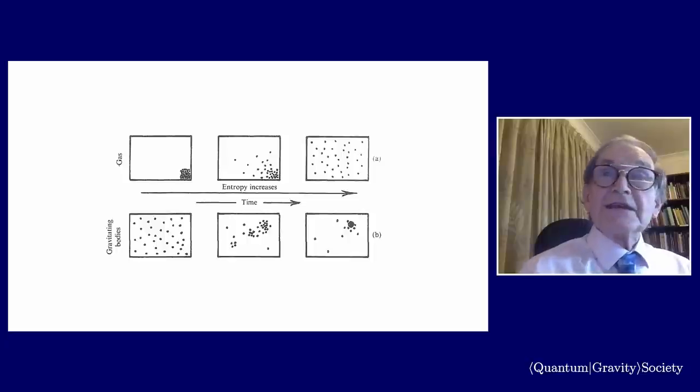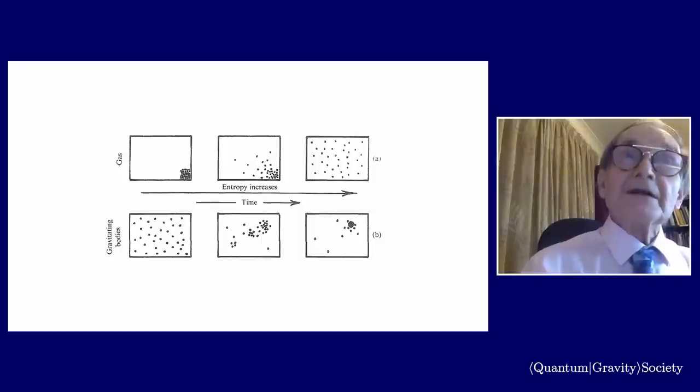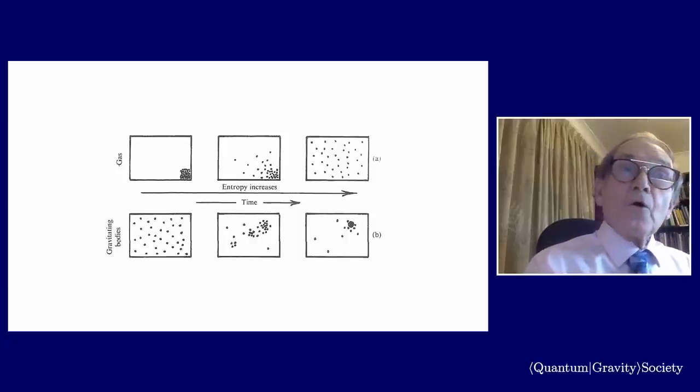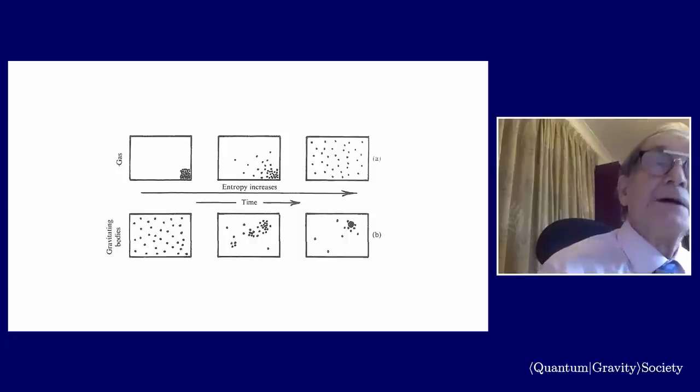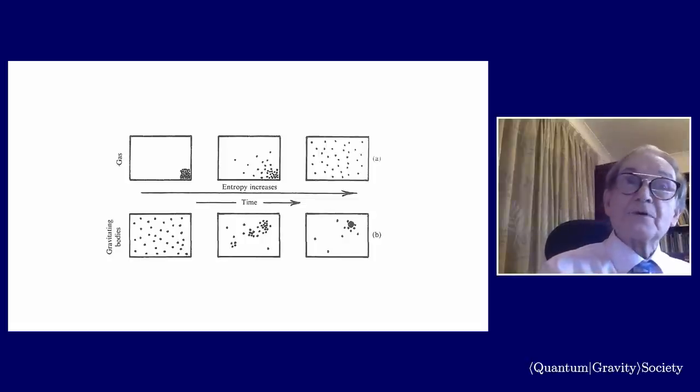So what we see in that Planck curve that I was just showing you is that the matter, yes, that is a very high maximum entropy state. But what we're also seeing, not from that picture, but from the uniformity of the microwave background all the way around, is telling us that the gravitational degrees of freedom are very constrained. So that's where the entropy was low, in gravity.